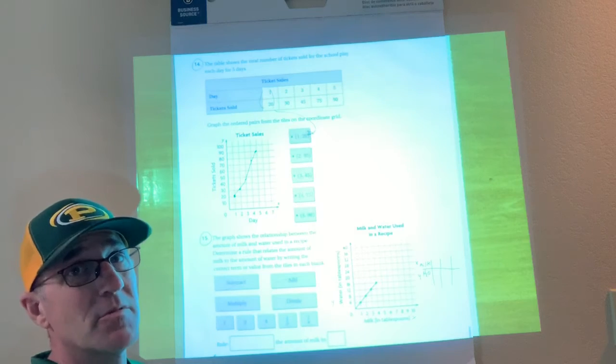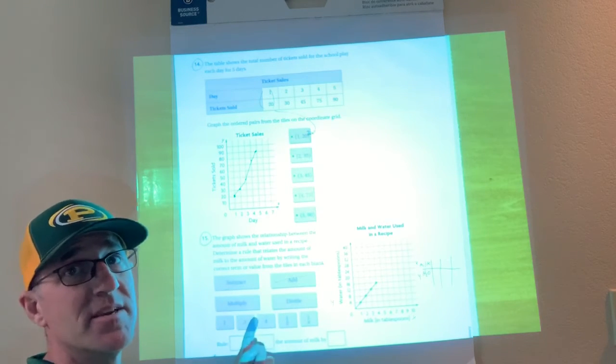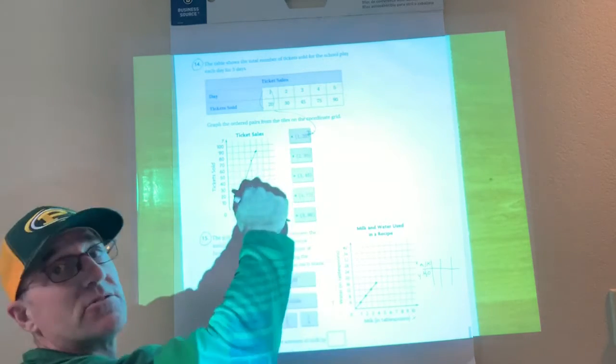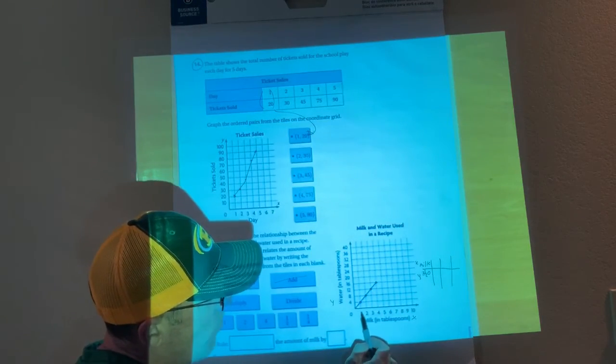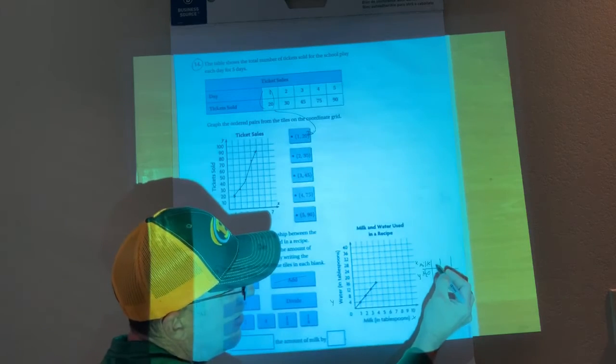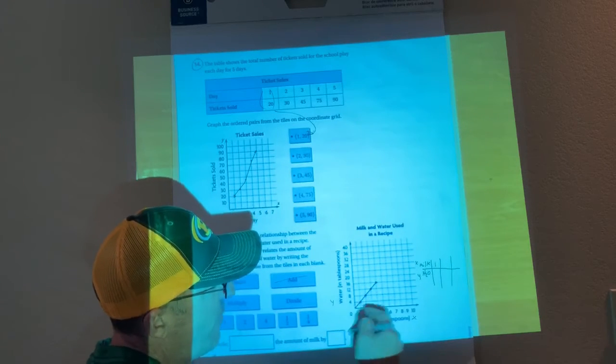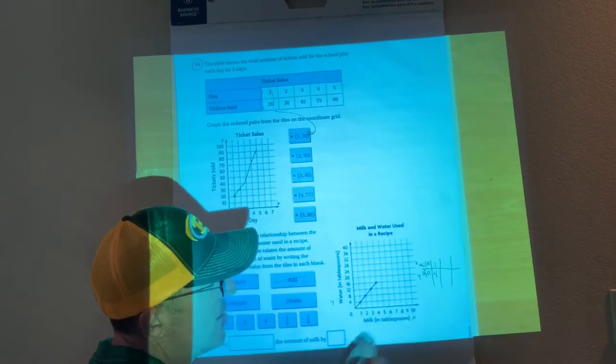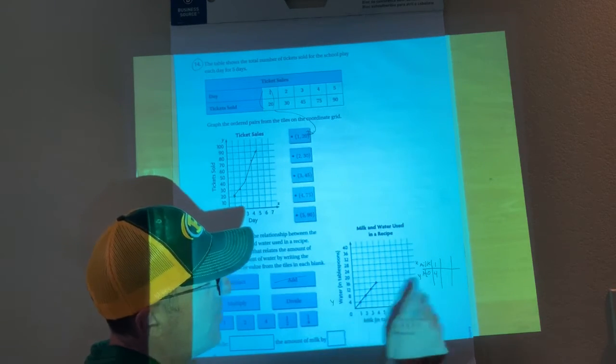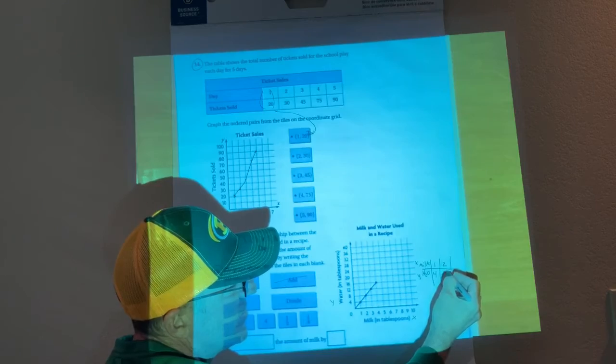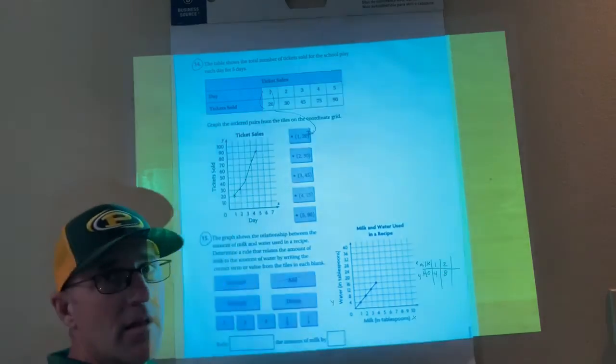So all I do is I go, well, my first x is 1. I go over 1 and I go up 4. If I go over 1, up 4, I could even do it again - I go over to 2 and up to 8, just to be sure things aren't weird. And they're not, right?